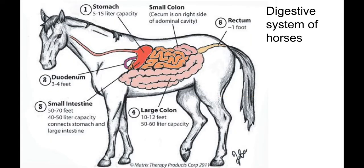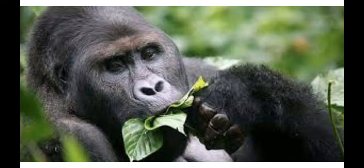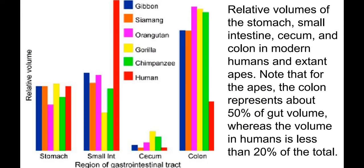Gorillas, chimpanzees, and other primates eat fruit, vegetables, and leaves all day. But again, they don't consume the plant material directly — bacteria eat the plants, and the gorillas kill and use the bacteria as food.